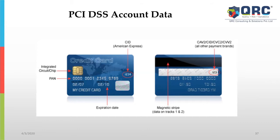Expiry date is the end date on which the card will expire. The CVV or CID for American Express is generally present on the front of the card. CVV is present for all other cards on the back, which is again a sensitive authentication data. Magnetic stripe data on track 1 and track 2 is generally used for card-present transactions when you are physically swiping the card.